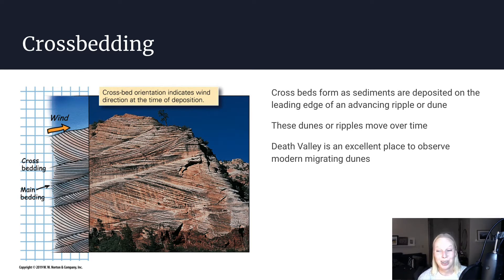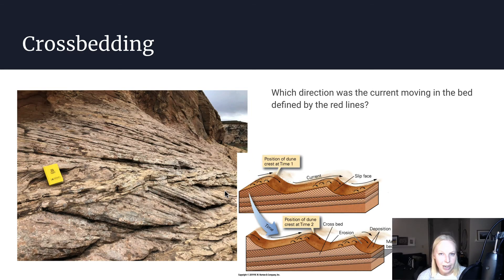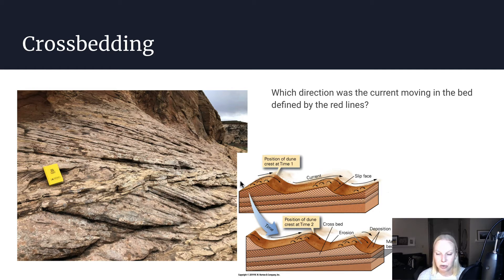This also illustrates something really cool: you can actually look at a rock like this and determine exactly what the wind direction was when those dunes existed in the past. Sand grains are pushed by the wind up the shallow side of the dune and then over the steep edge, being deposited there. When you look at this pattern, you can observe the direction the wind was moving. The wind was actually perpendicular to the cross beds at the time of deposition.